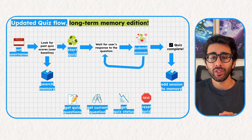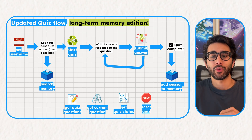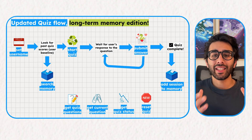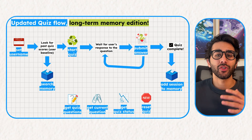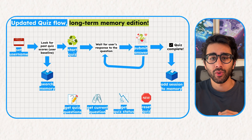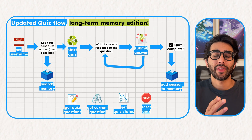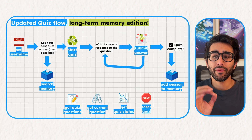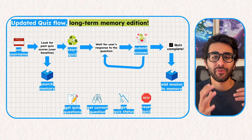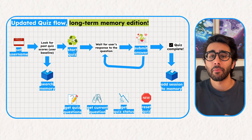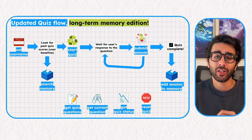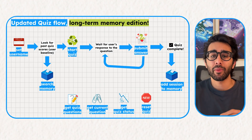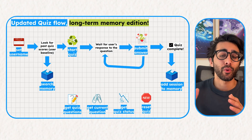This creates a new, more intelligent flow for our agent. When a conversation starts, the agent follows its new instructions: first it asks for the user's name so it can personalize the session. Once it has the name, it calls the search_memory tool to check for any history with that user. Then it proceeds with the quiz. The crucial final step is the callback — after the quiz is complete, the auto_save_to_memory callback function automatically runs, sending the session to memory bank to be summarized and stored for the future.